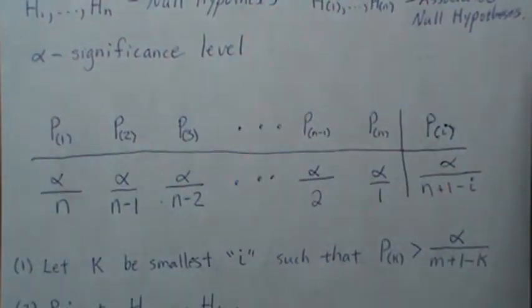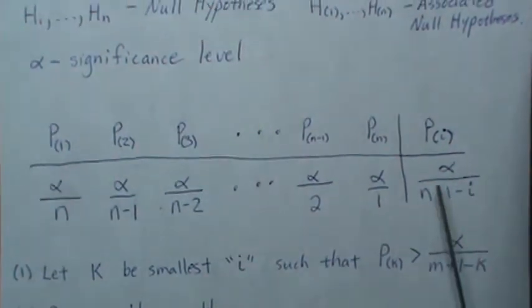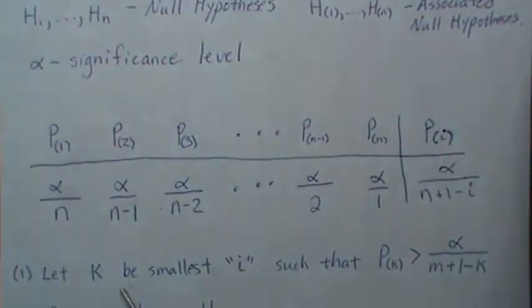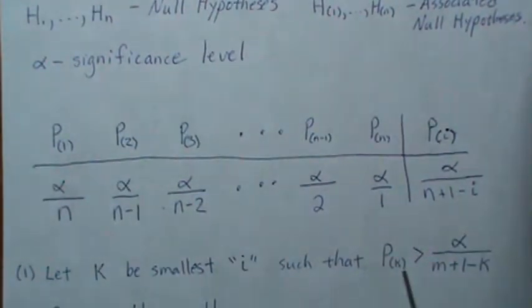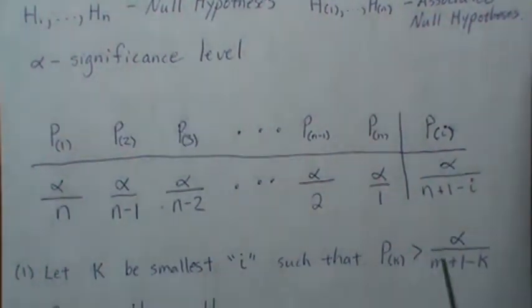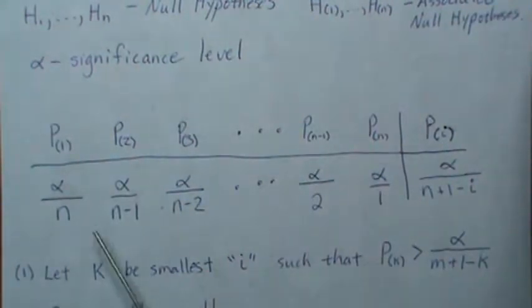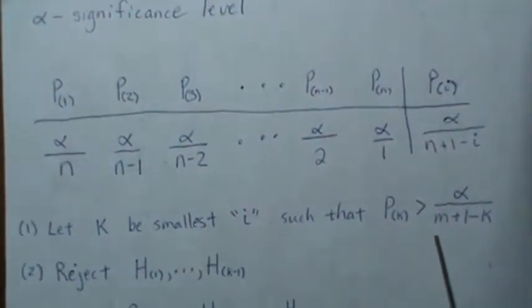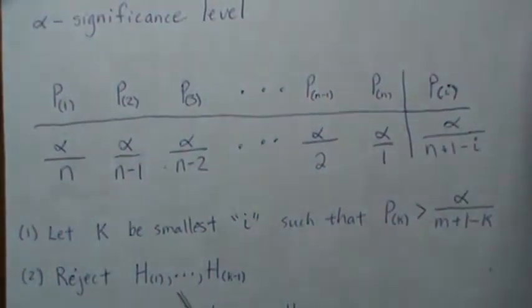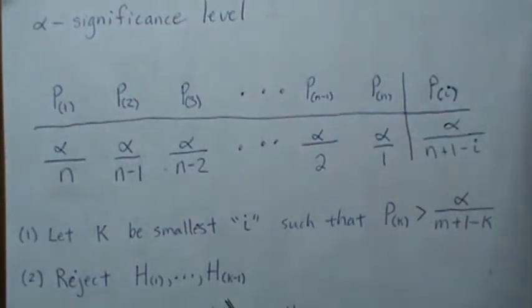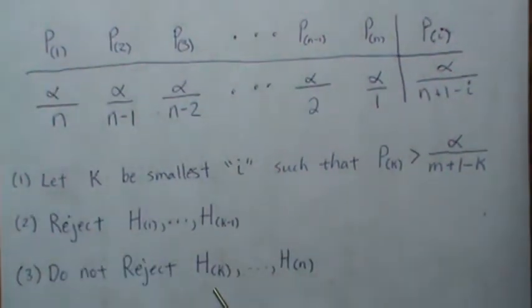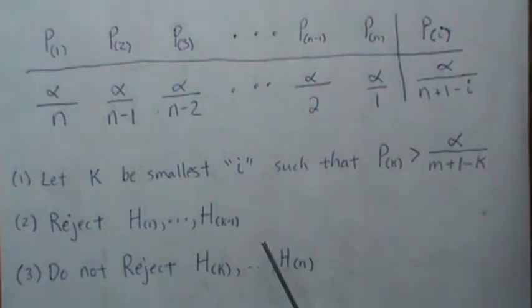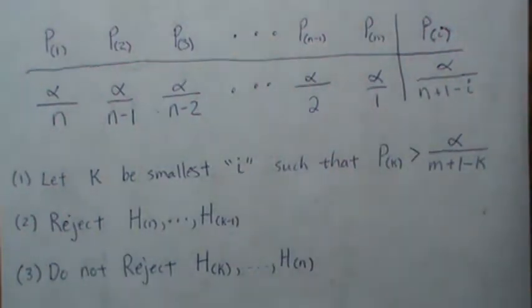Generically, you'll see it stated like this: let k be the smallest i such that the p-value is not greater than the significance level. Then you reject all hypotheses smaller than that k, and you do not reject H_k and larger. This multiple testing procedure controls for the family-wise error rate to be less than or equal to alpha.